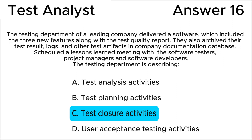Archiving test results and related artifacts is a common practice in the test closure phase for future reference and auditing. Conducting a lessons-learned meeting involves reflecting on the testing process, identifying what went well and what could be improved, which is a part of the closure activities.